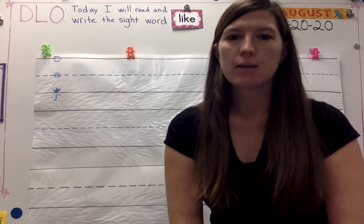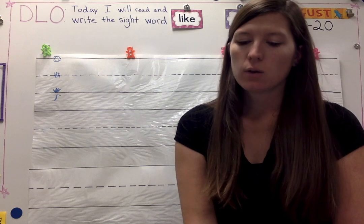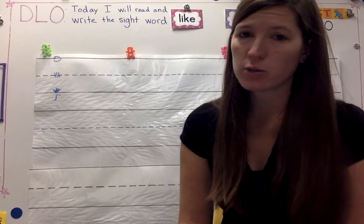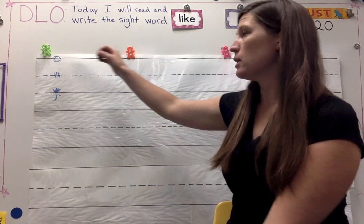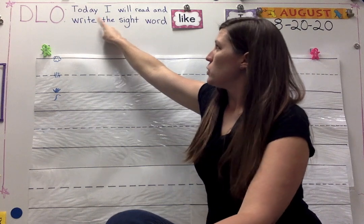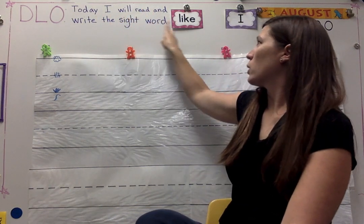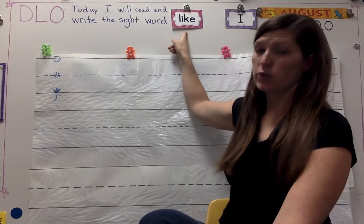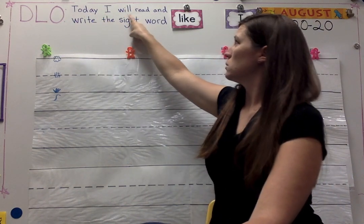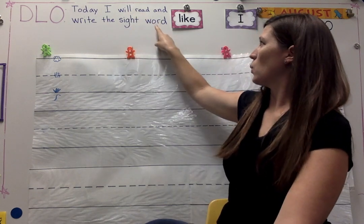Our new sight word today is like. Let's read our daily learning objective: learn about our new sight word like, sing some songs, and review the other sight word that we learned this week. I'll read it first and then you'll read it with me. Today I will read and write the sight word like. Now it's your turn — repeat after me: Today I will read and write the sight word like.